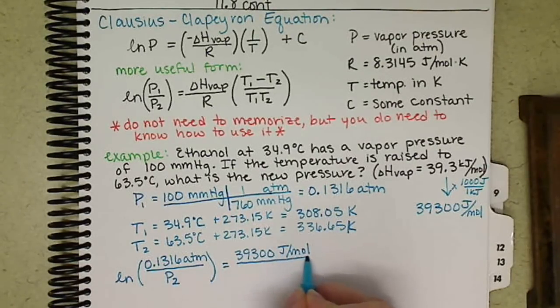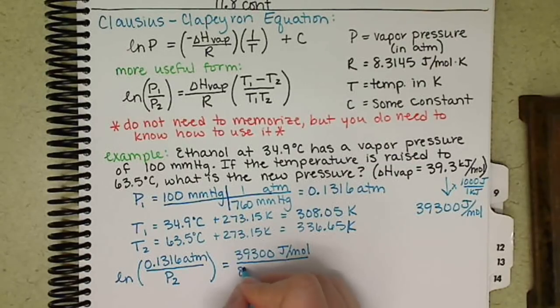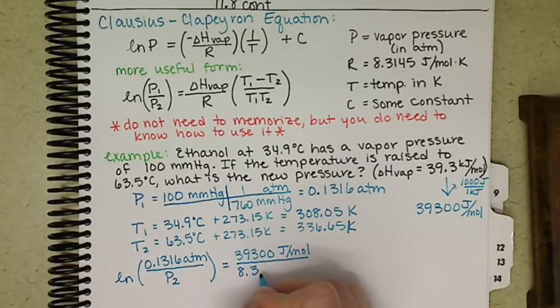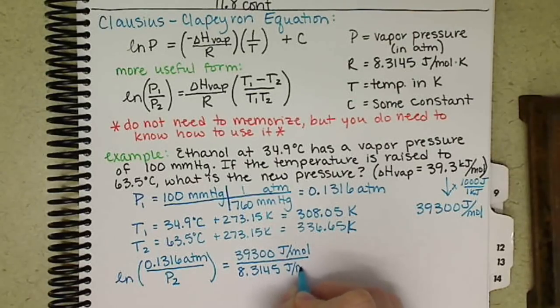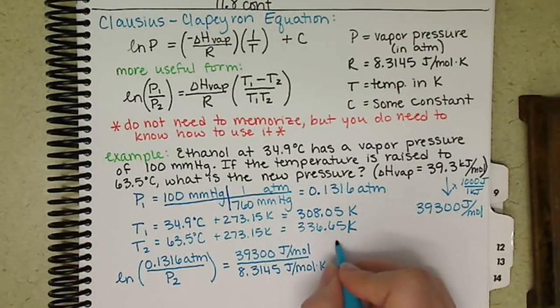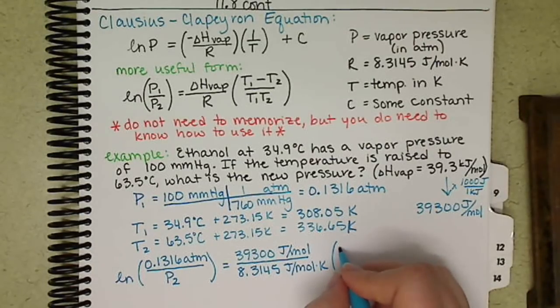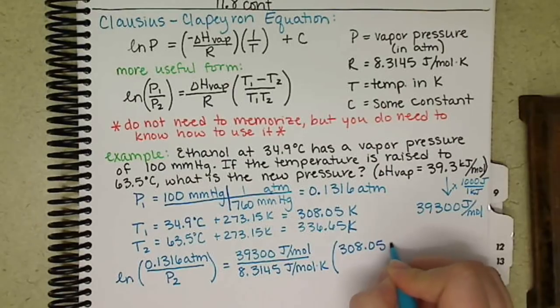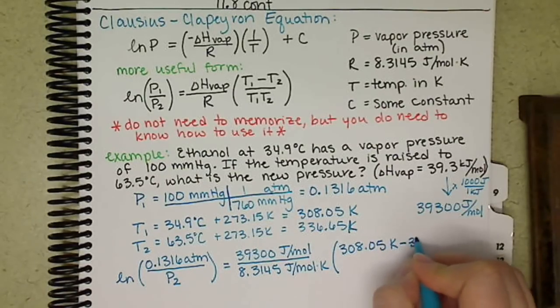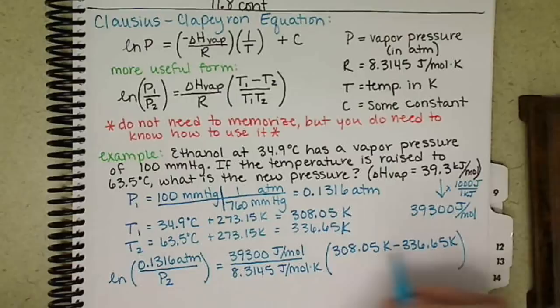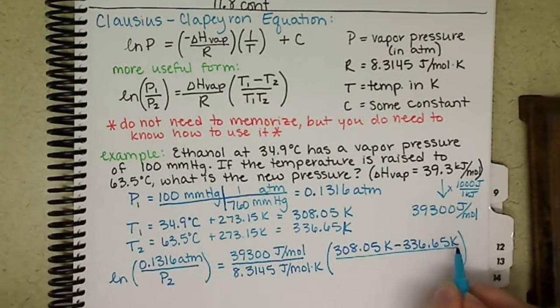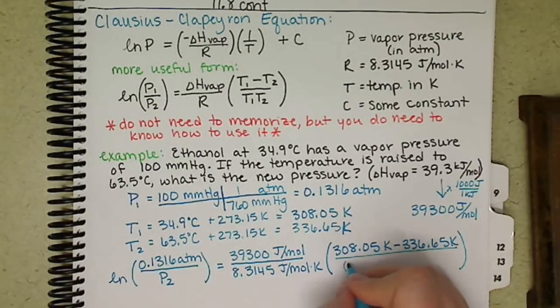So that's my delta H of vaporization, R is 8.3145 joules per mole Kelvin. And then I have T1 minus T2, and I'm going to divide that by T1 times T2.